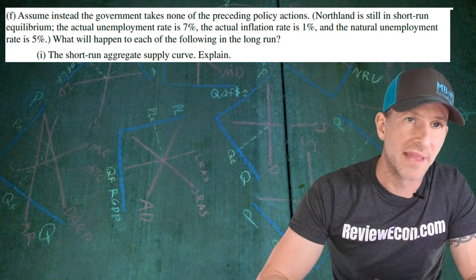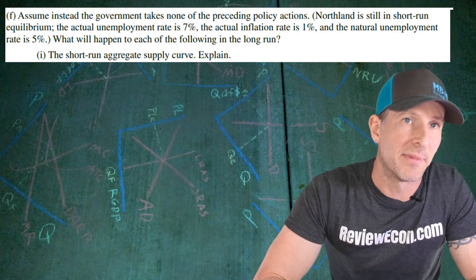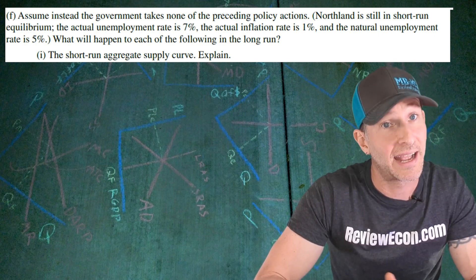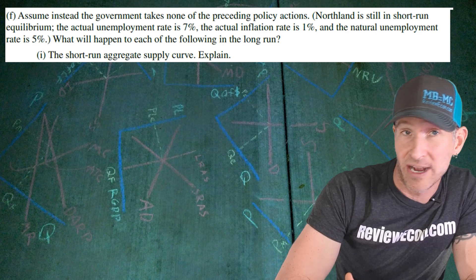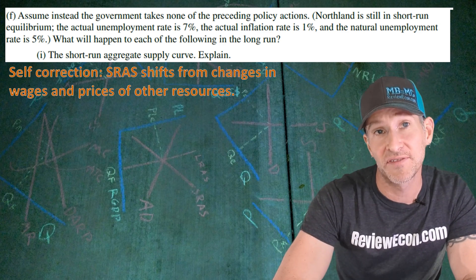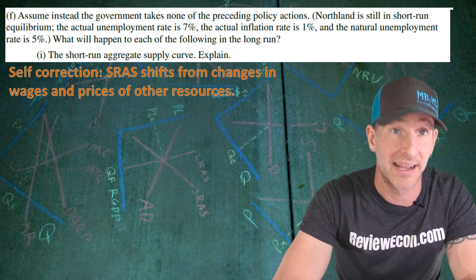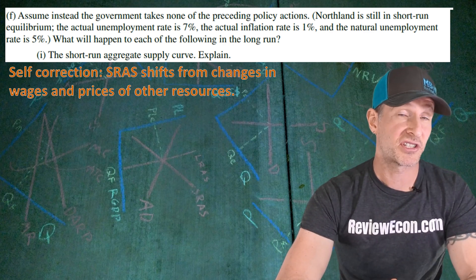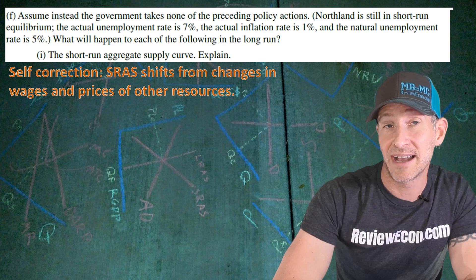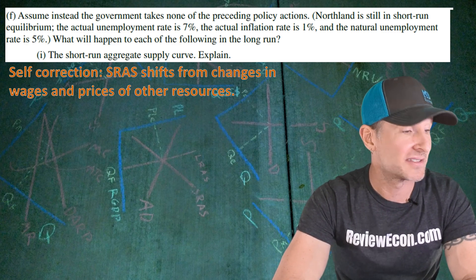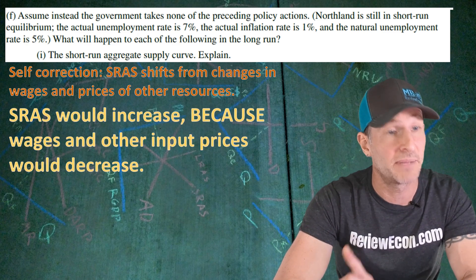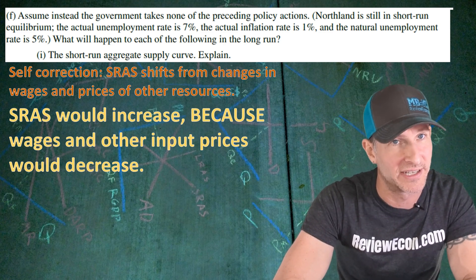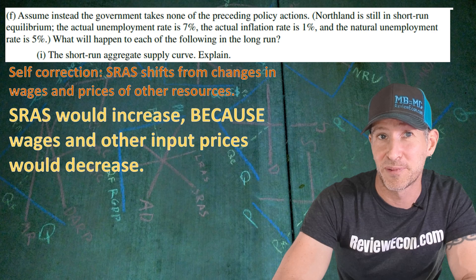For part F, we're asked to assume that no policy action is taken by the government of Northland, and we have to say what will happen to the short-run aggregate supply curve in the long run and explain. This is a self-correction question. Self-correction happens when there are shifts of the short-run aggregate supply curve as a result of changes in wages and other input prices. Since we have a recessionary gap — because the unemployment rate is higher than the natural rate — the short-run aggregate supply curve would increase because wages or other input prices would decrease.